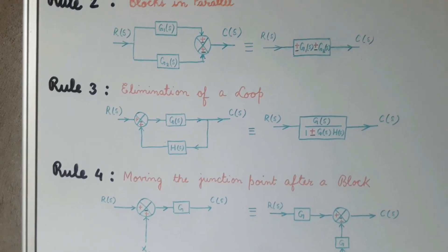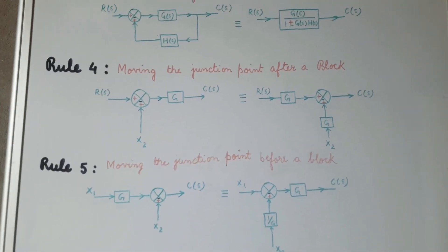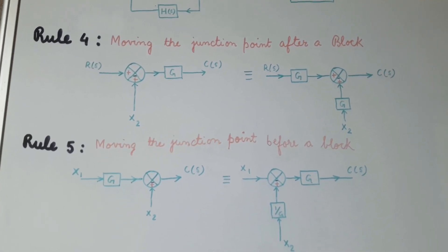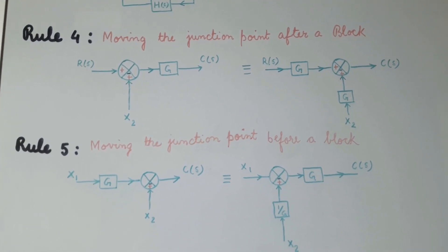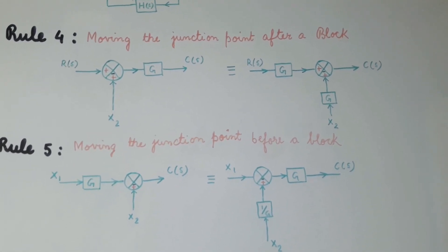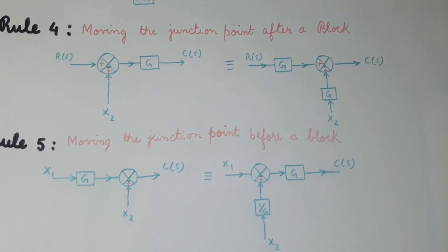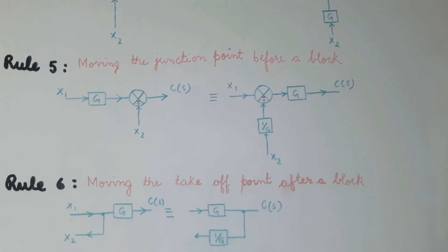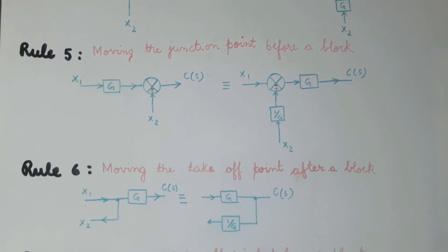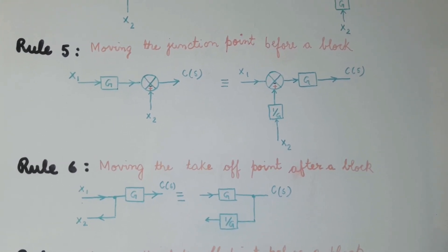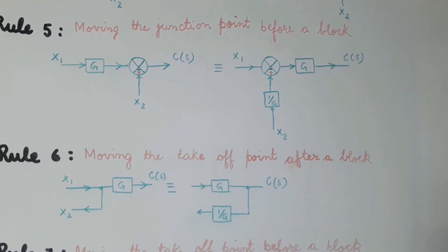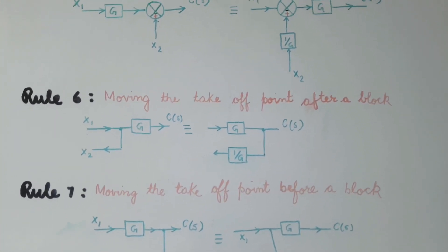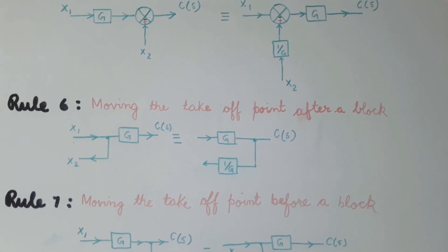Rule number 4 says that if we have to move the summing junction point after a block G, then we will have to add a block G with X2. Similarly, rule number 5 states that if we move the summing junction point before the block, we will connect a block 1/G with X2.